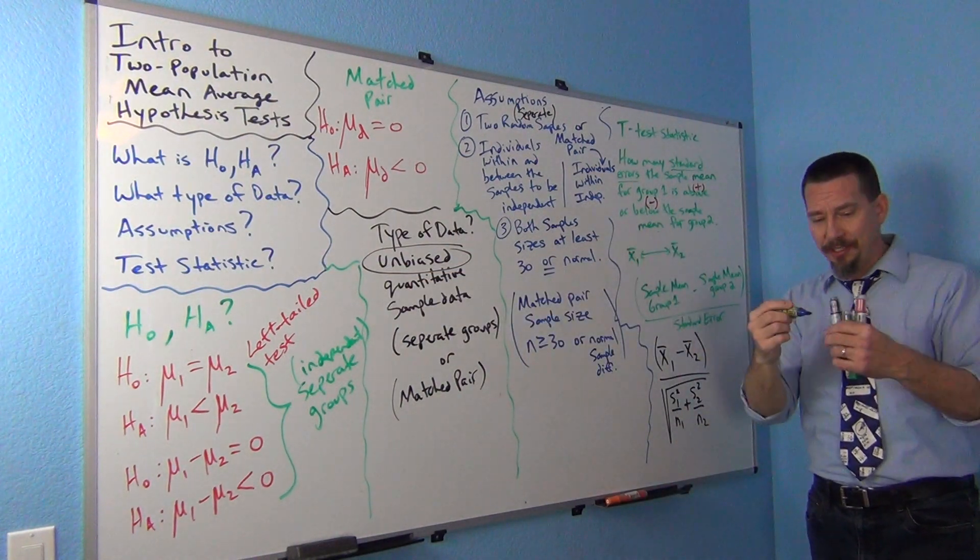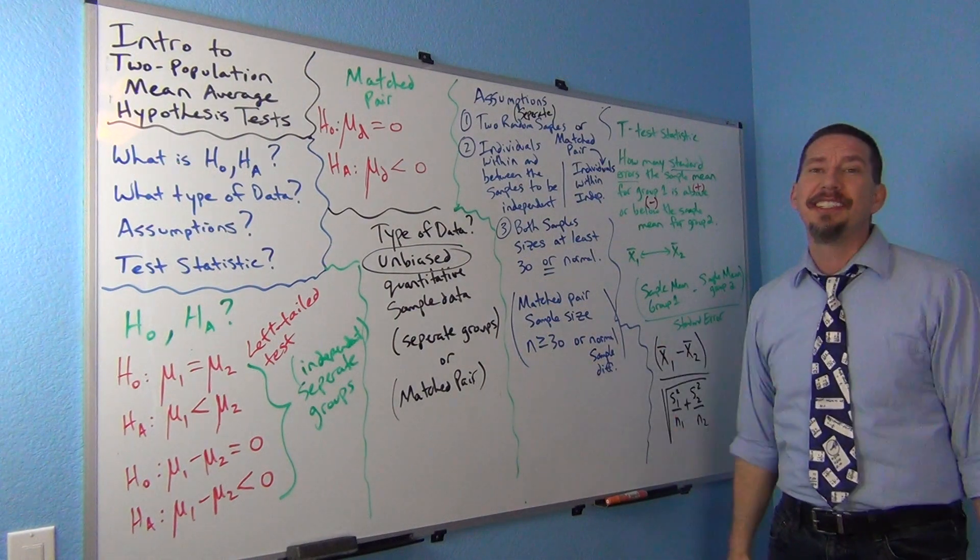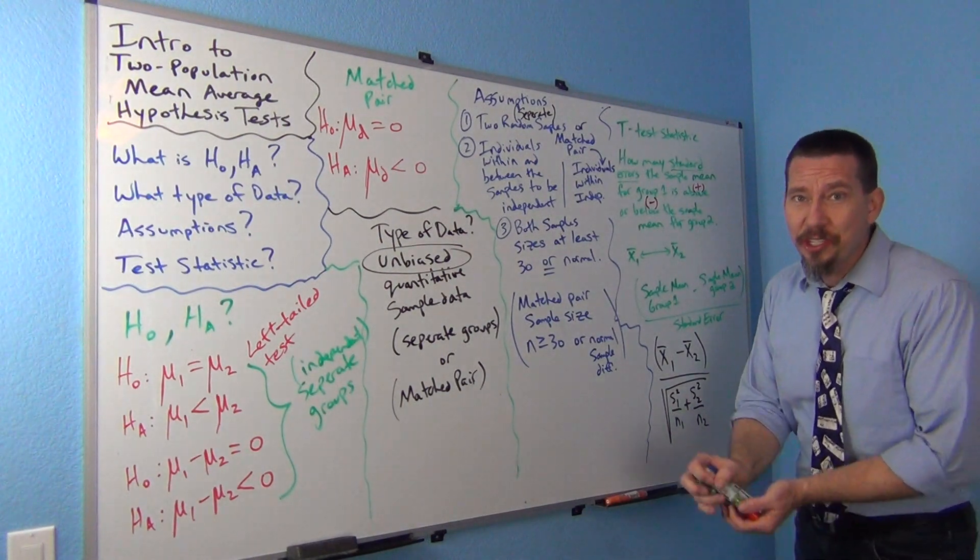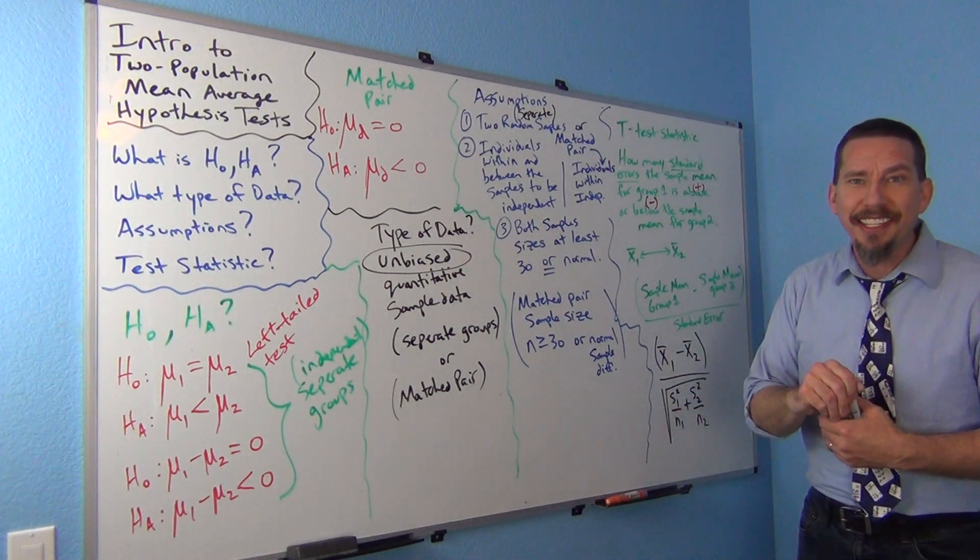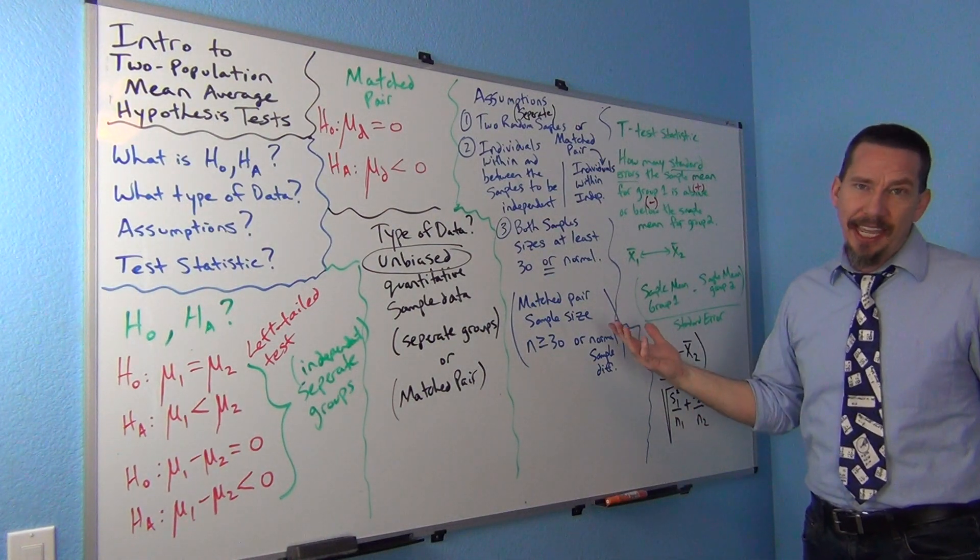What did we use for one population? For one population mean average, we used the t-test statistic from the t-distribution invented by William Gossett. We talked about that before, and we're going to use the t-test statistic again.